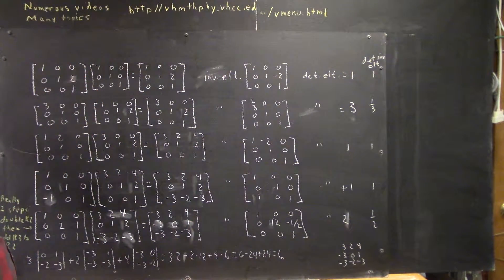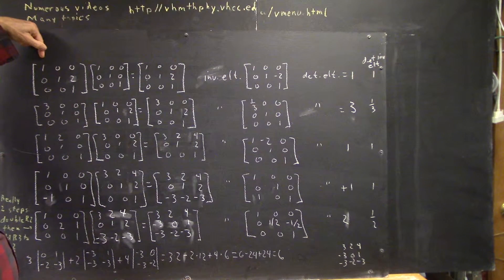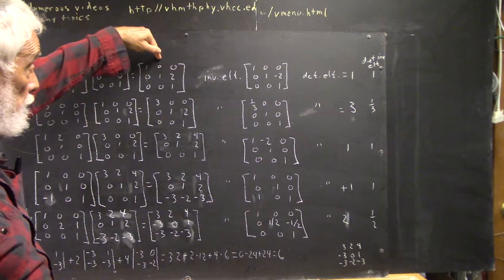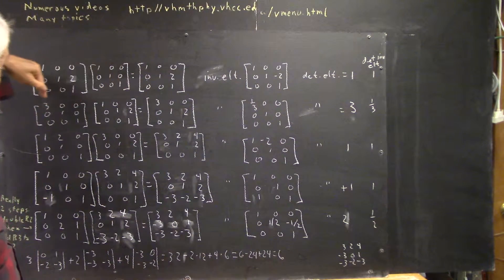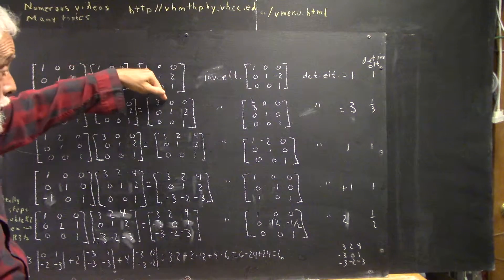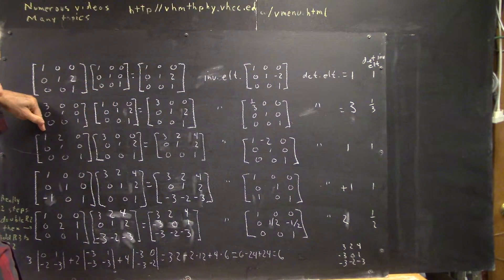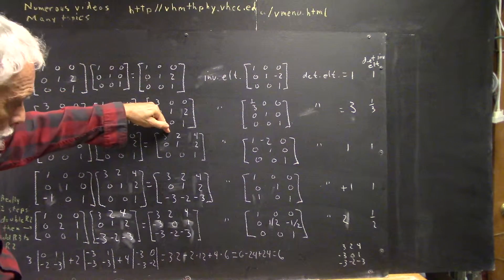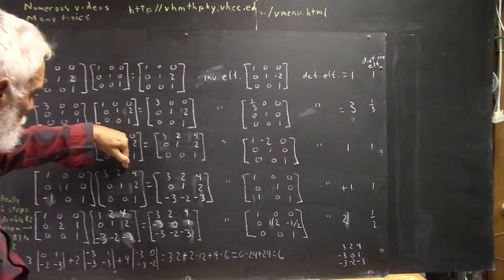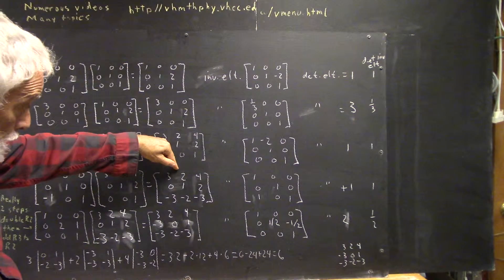We're going to start with the identity matrix and multiply it by an elementary matrix to get a new matrix. Then we're going to take that matrix and multiply it by another elementary matrix to get another new matrix, which we'll take and multiply by another elementary matrix. We'll take that matrix and multiply it on the left by another elementary matrix to get this matrix.